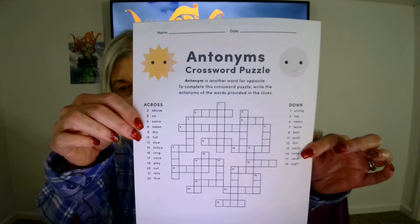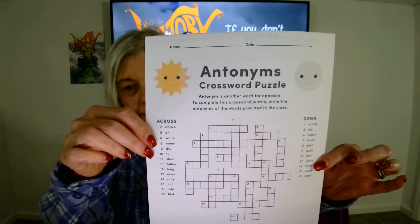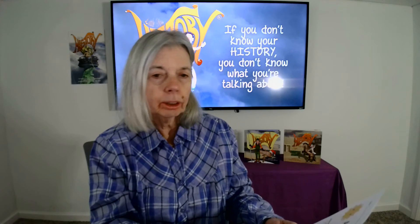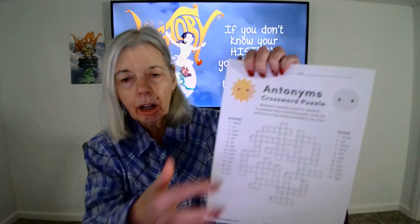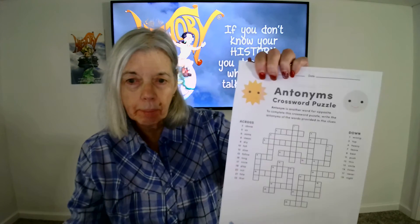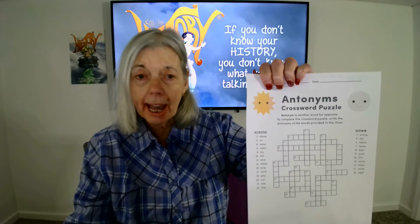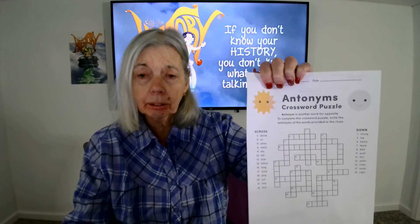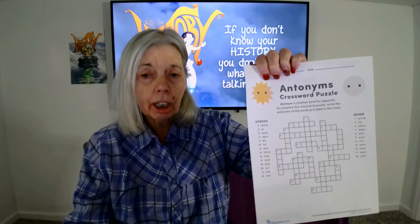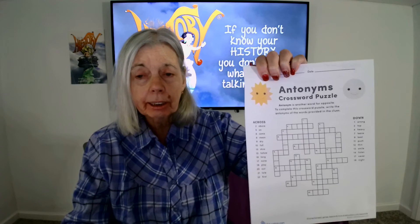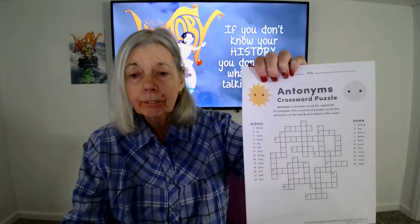Here is the puzzle. Your child will begin by looking at the words under the across column. You might want to have a dictionary on hand or access to the internet in case there is a word that your child is totally unfamiliar with. And your child will learn that there is sometimes more than one answer.